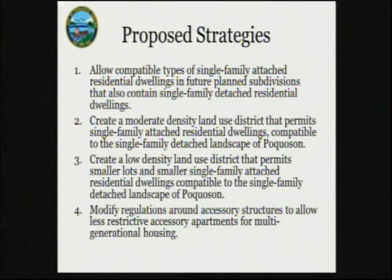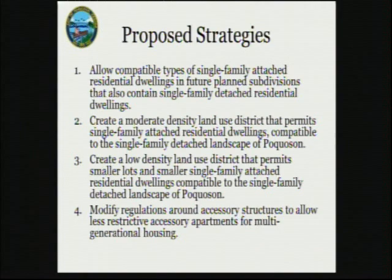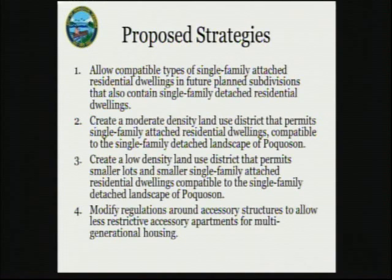Strategy two is to create a moderate-density land use district that permits single-family attached residential dwellings compatible to the single-family detached landscape of Pocosin. This was proposed in the previous comprehensive plan update process to create a middle ground between the large-lot single-family residential districts and the multi-family residential district — something with a density between three to nine units per acre that would accommodate smaller homes, starter homes, maybe townhomes, or other types of slightly higher-density and more affordable housing products.